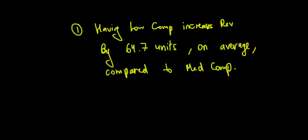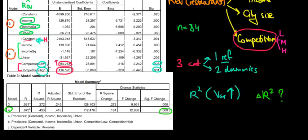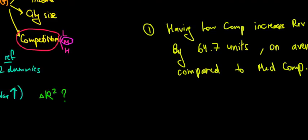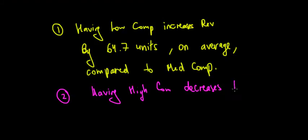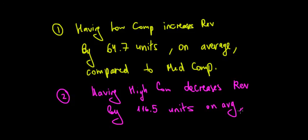Now let's interpret the second dummy with the same logic. When we have high competition, revenue decreases on average by 116.5 units compared to the same reference category — medium competition. So: having high competition decreases revenue by 116.5 units on average compared to medium competition.